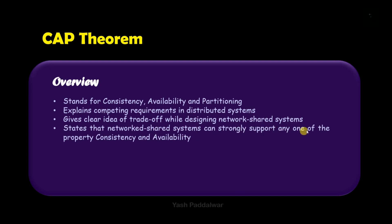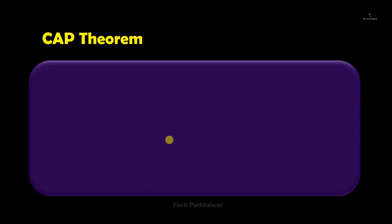The CAP theorem clearly states that network shared systems, which means distributed systems, can strongly support any one of these properties — it may be either consistency or it may be availability. Now we will be looking into a detailed explanation of each and every property inside the CAP theorem.